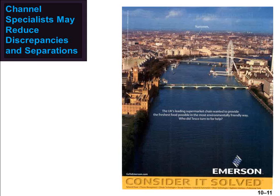Intermediaries can help to rectify discrepancies of quantity and assortment. Discrepancy of quantity is the difference between the quantity of products it is economical for a producer to make and the quantity that consumers or users really want. In this ad, Tesco, the large UK supermarket, utilizes Emerson to deliver the freshest foods available to its customers. Emerson serves as an intermediary assisting Tesco with adjusting discrepancies of quantity and assortment.